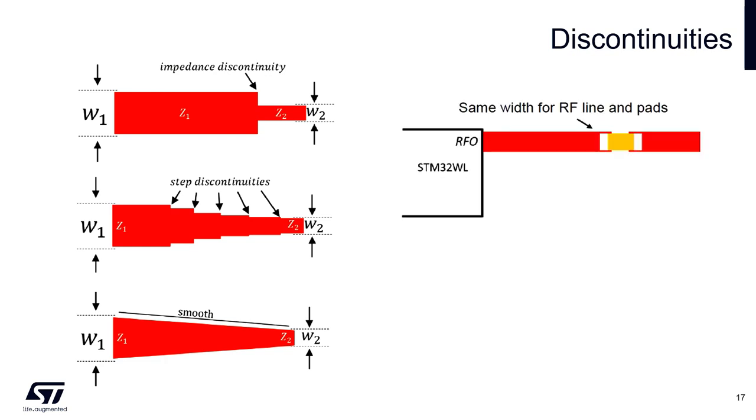Another typical place where impedance discontinuities occur is at the junctions of transmission lines and pads. In this case, it is recommended to have the size of the pad aligned with the width of the transmission line. Here we can see the typical example with an RF switch.